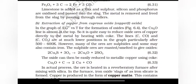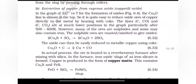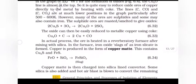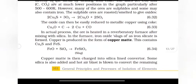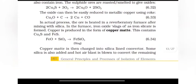Extraction of copper from cuprous oxide. In the graph ΔrG versus T for the formation of oxides, the Cu2O line is almost at the top. So, it is quite easy to reduce oxides of copper directly to the metal by heating with coke. The lines C to CO and C to CO2 are at much lower positions in the graph, particularly after 500-600 Kelvin. However, many of the ores are sulfides and may also contain iron. The sulfide ores are roasted and smelted to give oxides. The oxide can be easily reduced to metallic copper using coke. In actual process, the ore is heated in a reverberatory furnace after mixing with silica.